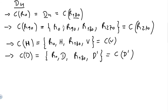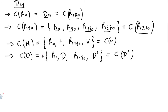The centralizer of the 90-degree rotation in D4 is the set of rotations: the 0-degree, 90-degree, 180-degree, and 270-degree rotations. This set is also the centralizer of the 270-degree rotation.